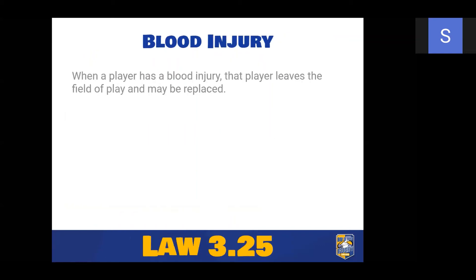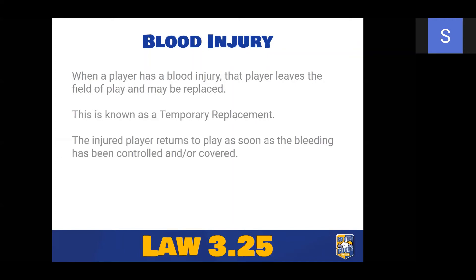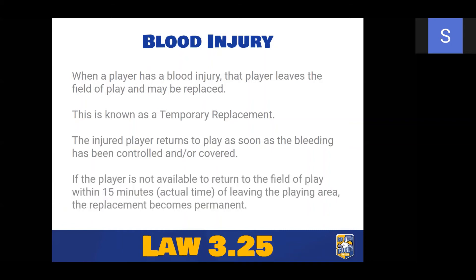Blood injury: if a player has a blood injury, they must leave the field of play. They can be replaced temporarily and can return as soon as bleeding is controlled with the referee's permission. If the player is not available to return within 15 minutes of actual time — not game time — then the replacement becomes permanent as an injury replacement. For example, if they leave at 10:25, they must be available to return by 10:40, regardless of how much game time has passed.